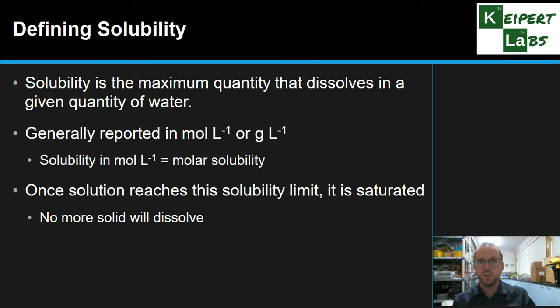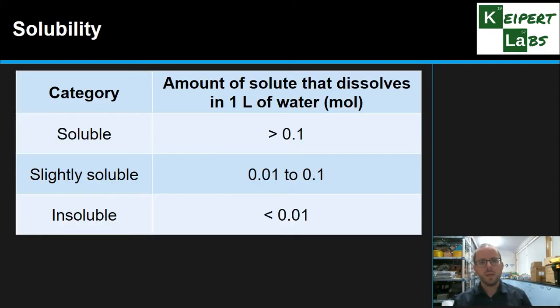But once we get the solution to reach this solubility limit, we've dissolved as much as possible, we say the solution is saturated. There is no extra space, no extra room, no more solid will dissolve, it will sit undissolved at the bottom. So this solubility defines that point at which we go from being not saturated or unsaturated to being saturated.